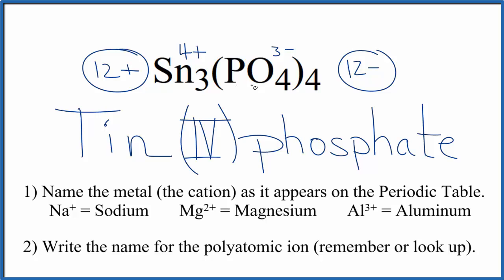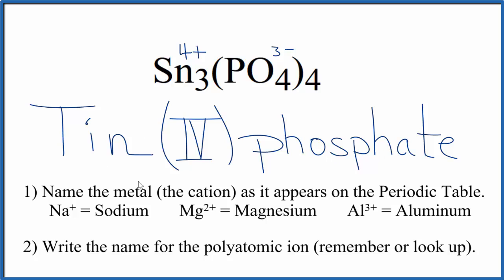And the name for Sn3(PO4)4 is tin(IV)phosphate. If you were given this name and asked to write the formula, you would know that the tin would have a charge of four plus because of this Roman numeral IV here. Then the phosphate ion, you could figure out how many you needed to make the charge add up to zero. This is Dr. B. Thanks for watching.